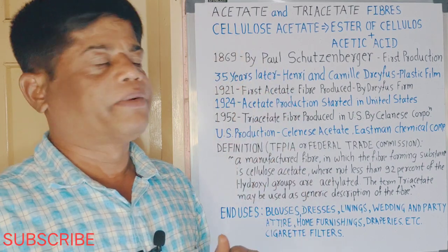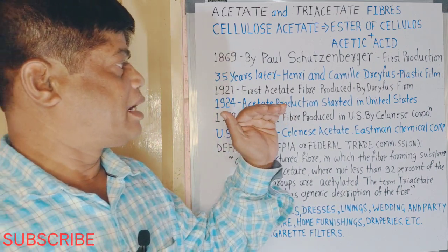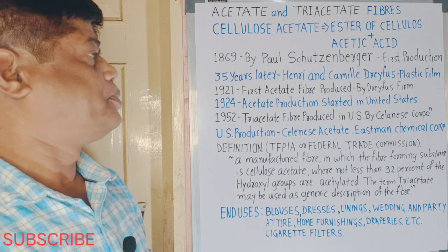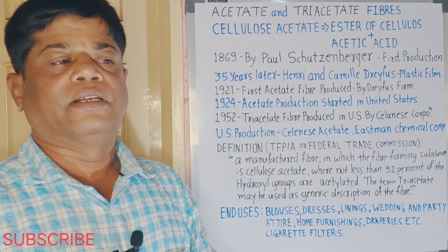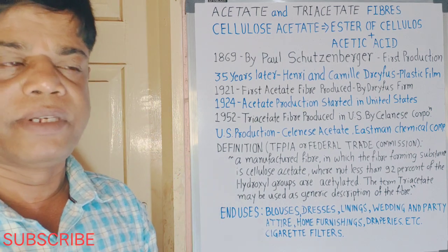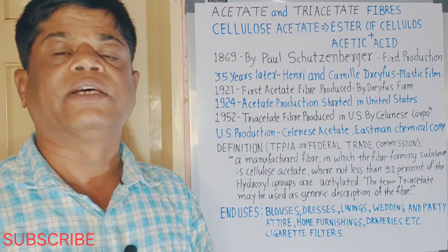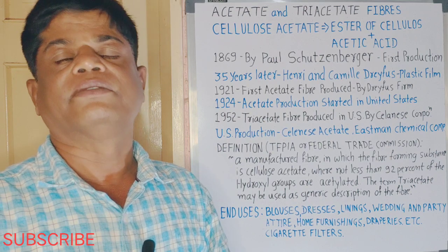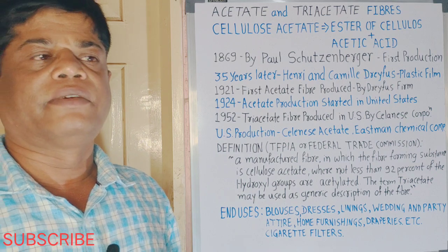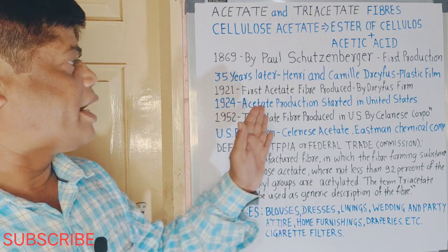About 35 years later, Henry and Camille Dreyfus succeeded in eliminating the risk factors present in the production of acetate fibers — risks related to quality, end-use applications, efficiency, and production difficulties. They succeeded in commercial production of acetate fibers.